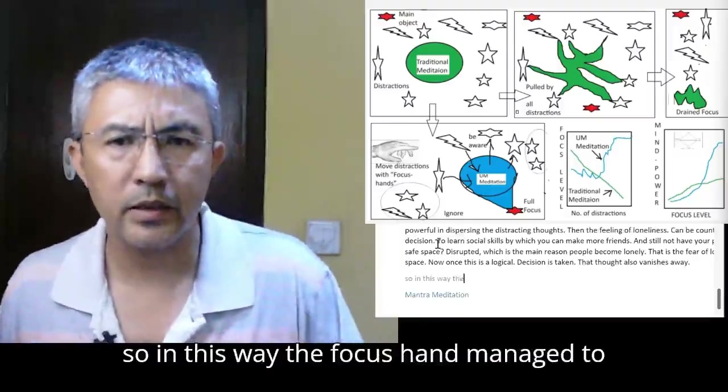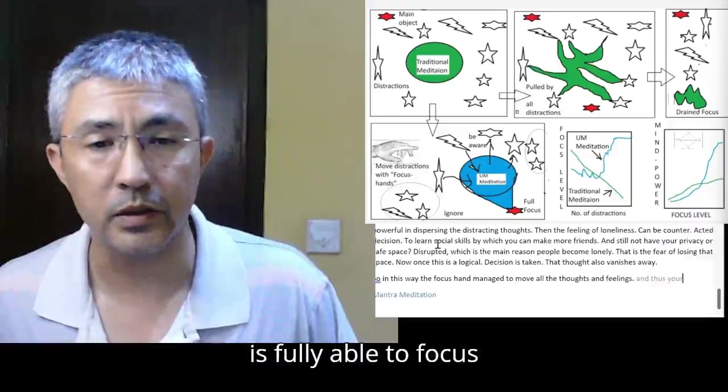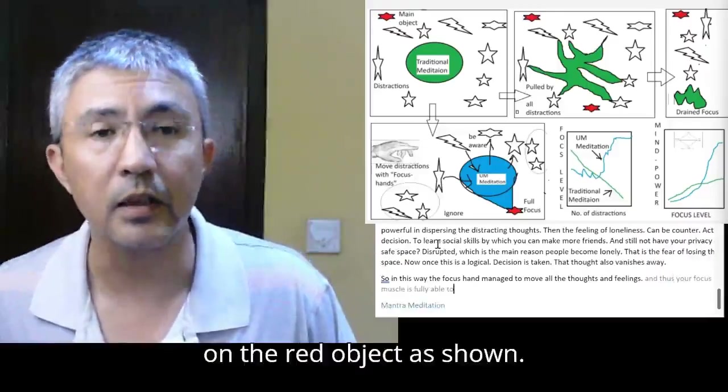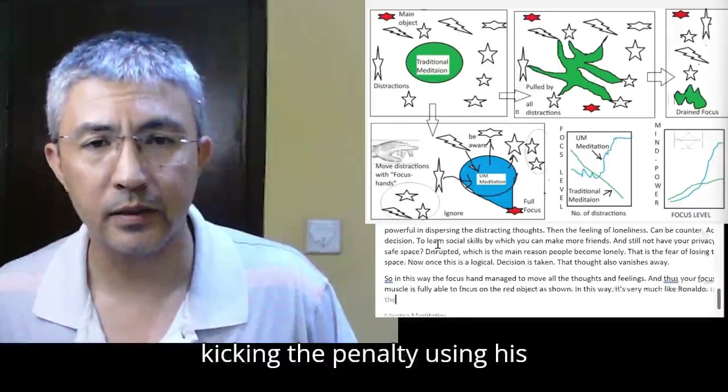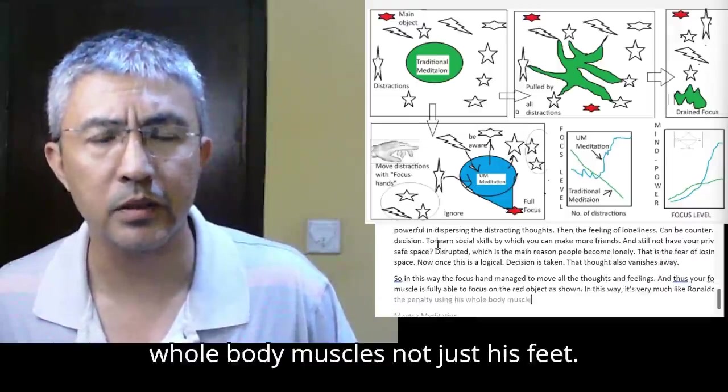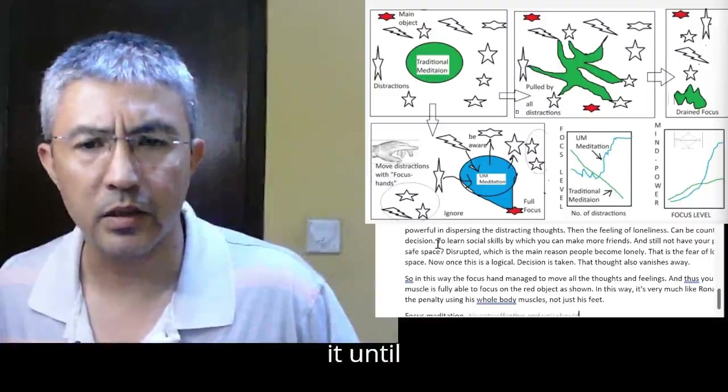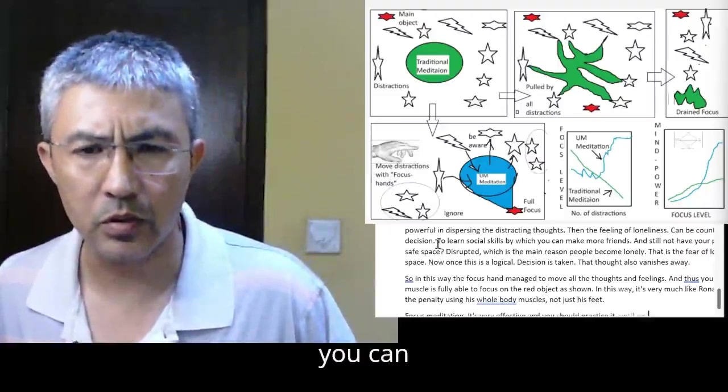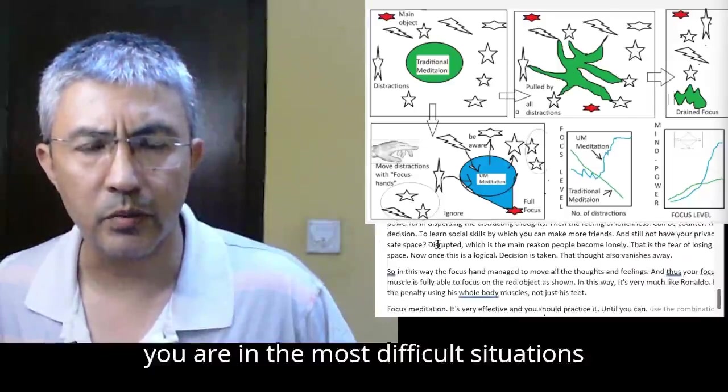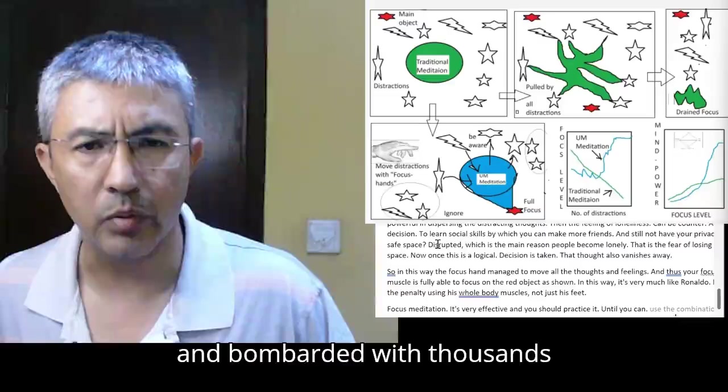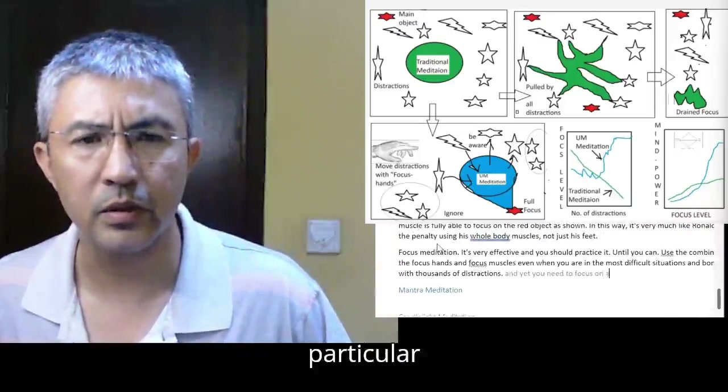So in this way, the focus hand managed to move all the thoughts and feelings, and thus your focus muscle is fully able to focus on the red object as shown. In this way, it's very much like Ronaldo kicking the penalty using his whole body muscles, not just his feet. Focus meditation is very effective, and you should practice it until you can use the combination of the focus hands and focus muscles even when you are in the most difficult situations and bombarded with thousands of distractions. And yet, you need to focus on a particular agenda because your life almost depends on that.